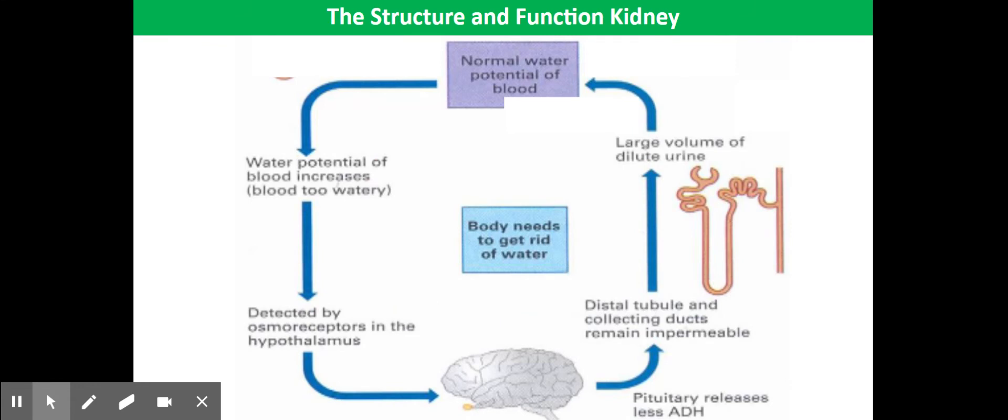This bottom loop shows us what happens when the blood water potential is too high - you've got too much water in your blood. If this happens, the hypothalamus will cause the pituitary gland to release less ADH, less antidiuretic hormone. As a result, less ADH is going to travel in the bloodstream to the kidneys, so the walls of the collecting ducts are going to become less permeable to water.